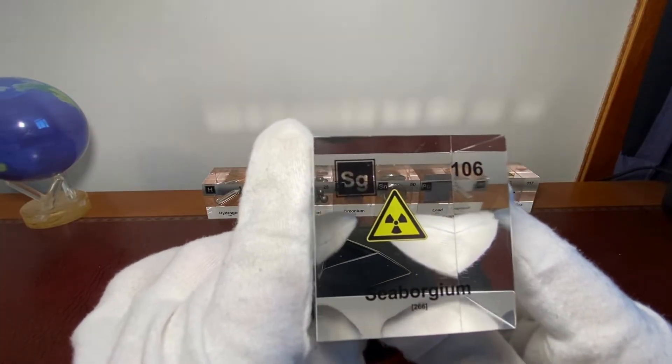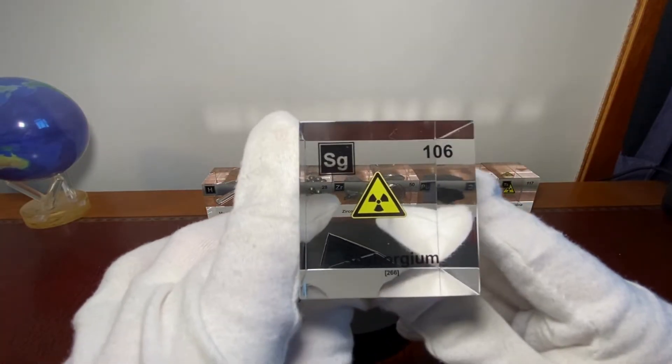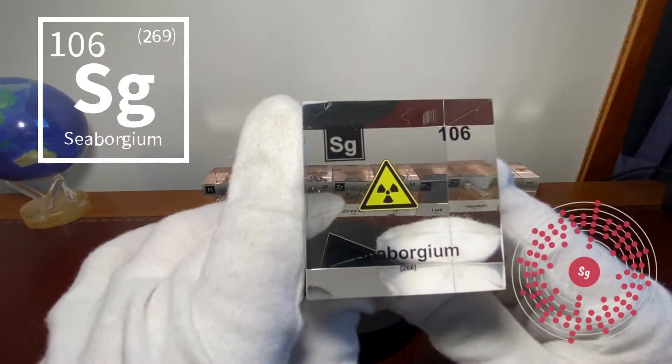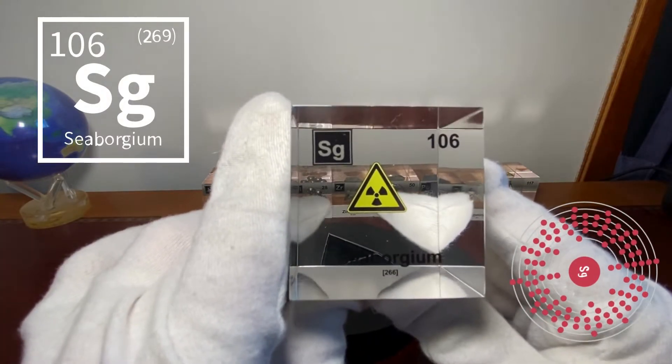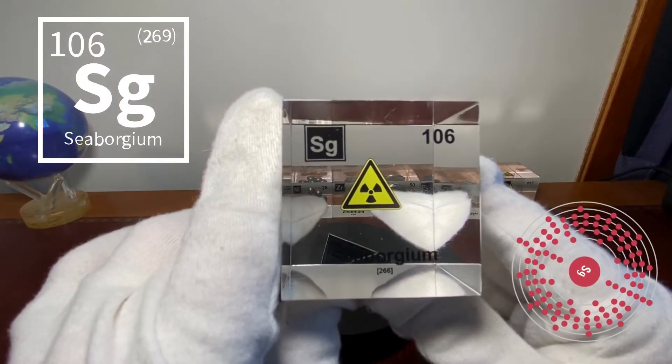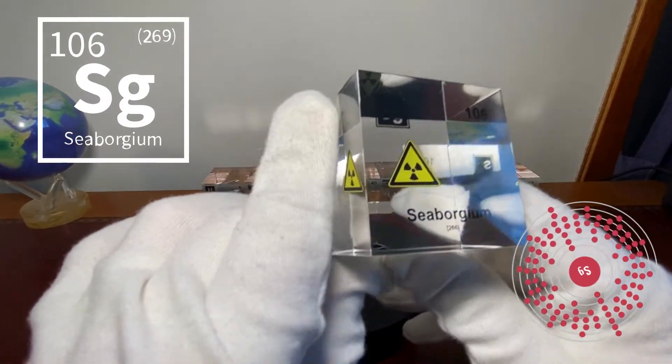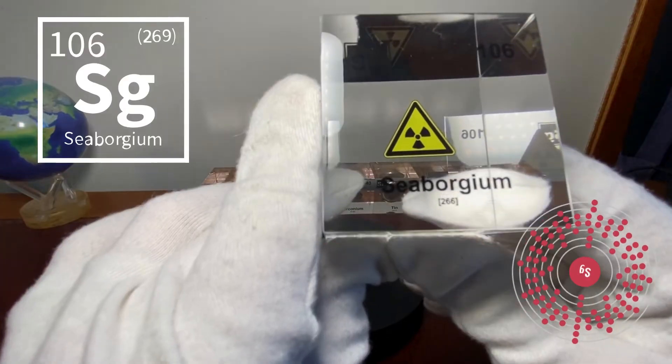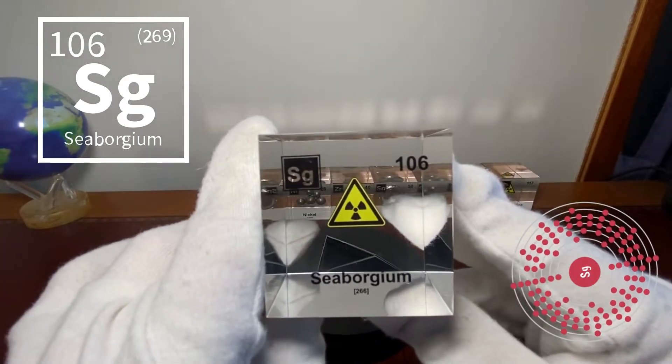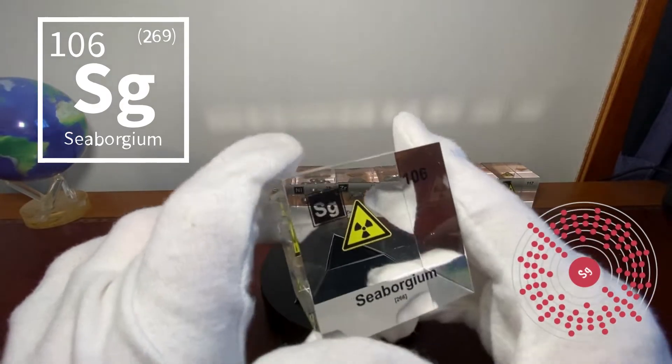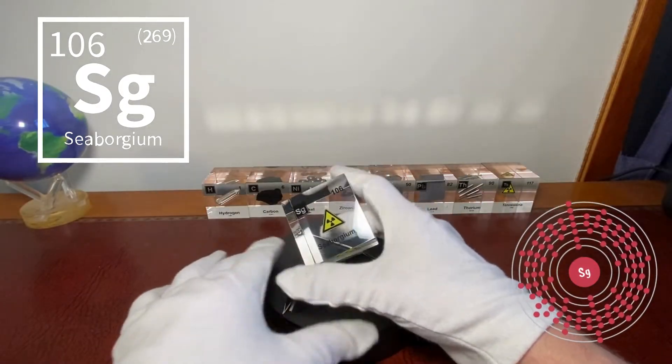So let's go to the properties. It's named SG, those are letters. It's called Seaborgium, very interesting. It has an atomic mass of 266 and it is element 106. So let's put it up here.